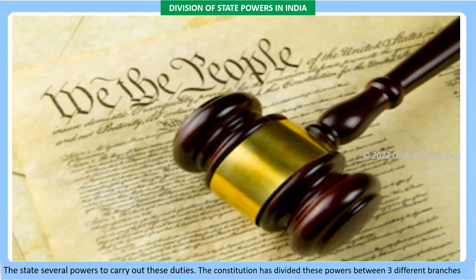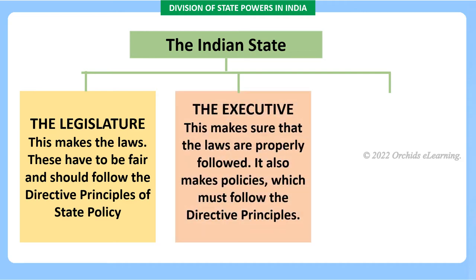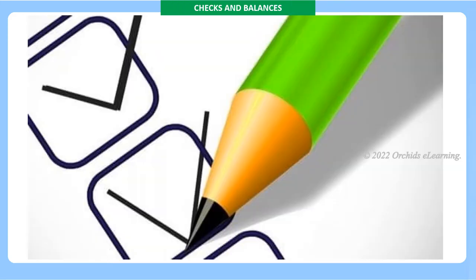The constitution has divided these powers between three different branches. The Legislature — this makes the laws; these have to be fair and should follow the directive principles of state policy. The Executive — this makes sure that the laws are properly followed and also makes policies which must follow the directive principles. The Judiciary — these are the courts; they make sure that laws are properly understood.